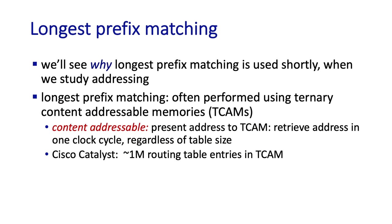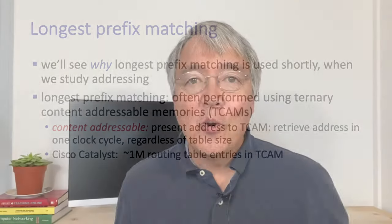We'll see shortly that longest prefix matching dovetails really nicely with network addressing. This match-plus-action is usually carried out in hardware. The matching is often done using what are called ternary content addressable memories — TCAMs — where an address is presented to the TCAM and the matching value is returned in one clock cycle regardless of table size. TCAMs thus result in really fast lookups. Once a packet's appropriate output port has been determined by longest prefix matching, the packet is ready to be forwarded into the switching fabric.